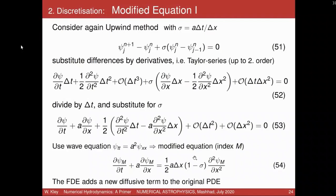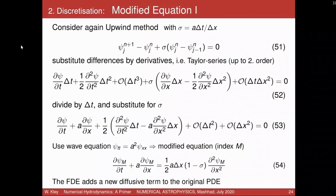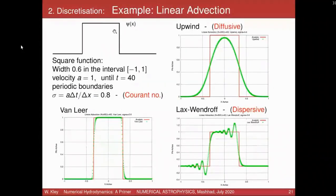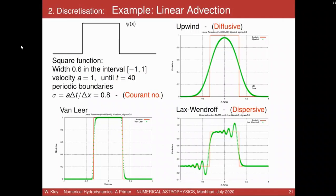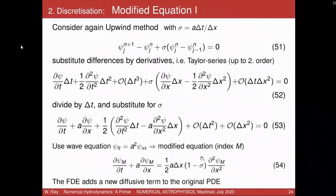With sigma = 1, you just move the profile exactly one grid cell further in one time step, giving the analytic solution — but this is only possible for this very simple problem. The upwind method is nicely diffusive: it's exactly a diffusion process given by the modified equation, and you can even calculate the diffusion coefficient in advance. The finite difference equations add a diffusive term to the original PDE. This way of studying stability through the modified equation is called the Hilton method.